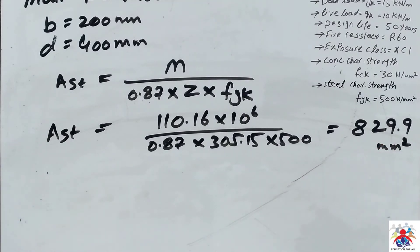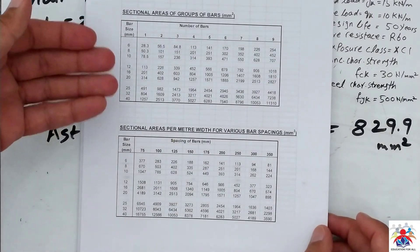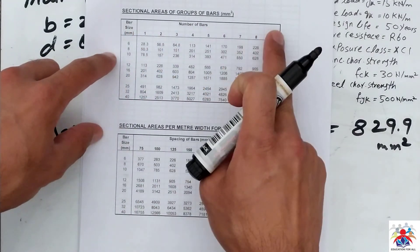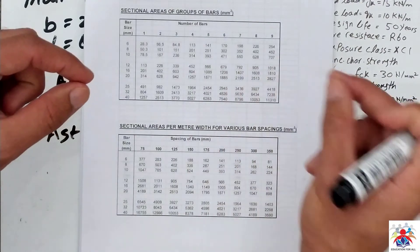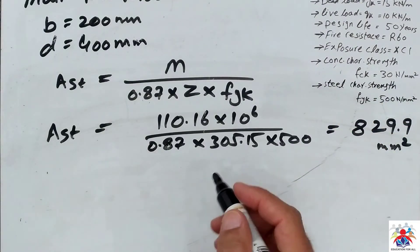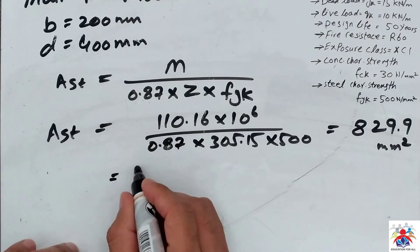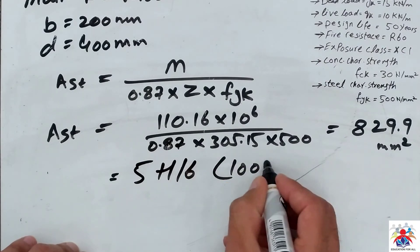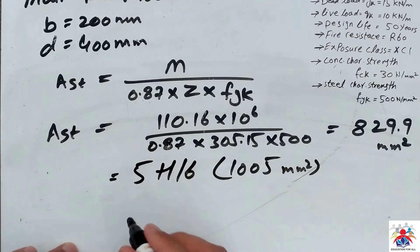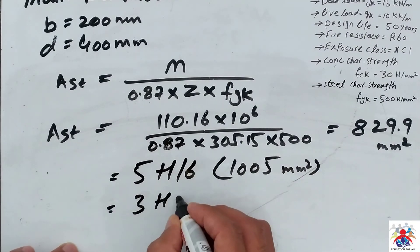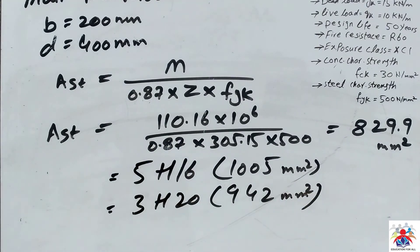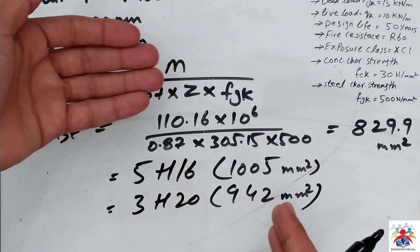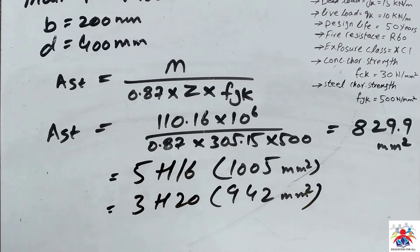We need to cover this area by providing enough steel bars. Using the Eurocode bar size table — which shows number of bars, bar diameter, and area of steel — there are two possibilities: five bars of 16 mm diameter giving 1005 mm², or three bars of 20 mm diameter giving 942 mm². That's it for today, thank you for watching. Please don't forget to subscribe to my channel.